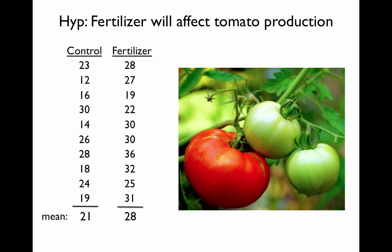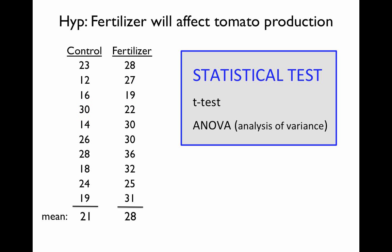For example, if we look within the control column, there's one control plant that did not get fertilized that actually produced 30 tomatoes — more than the average fertilized plant. Likewise, in the fertilizer column, one plant only produced 19 tomatoes, which is less than the average we saw in the control treatment. In order to figure out whether we can really be confident that the difference in average tomatoes between treatments is meaningful or represents a true difference, given this variation within each data set, we need to use a statistical test.